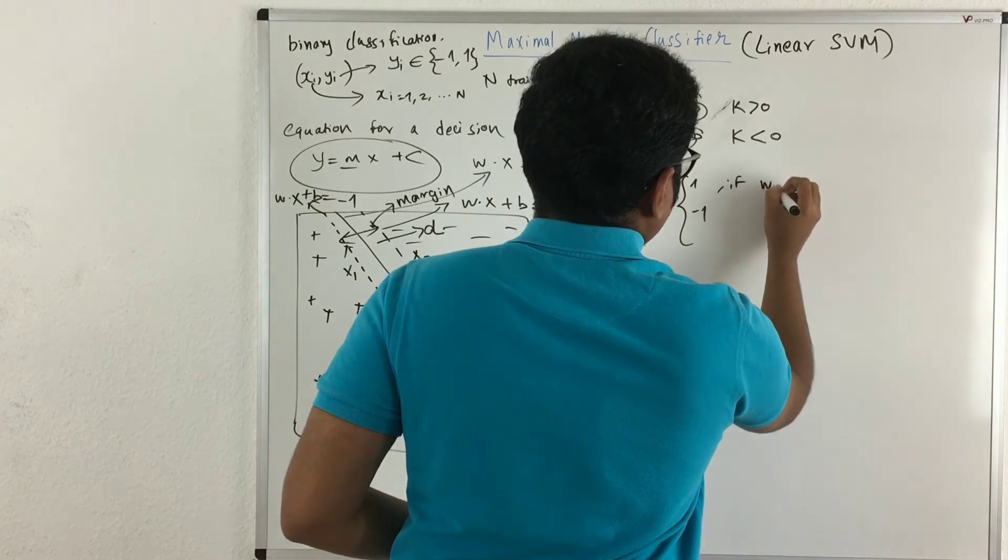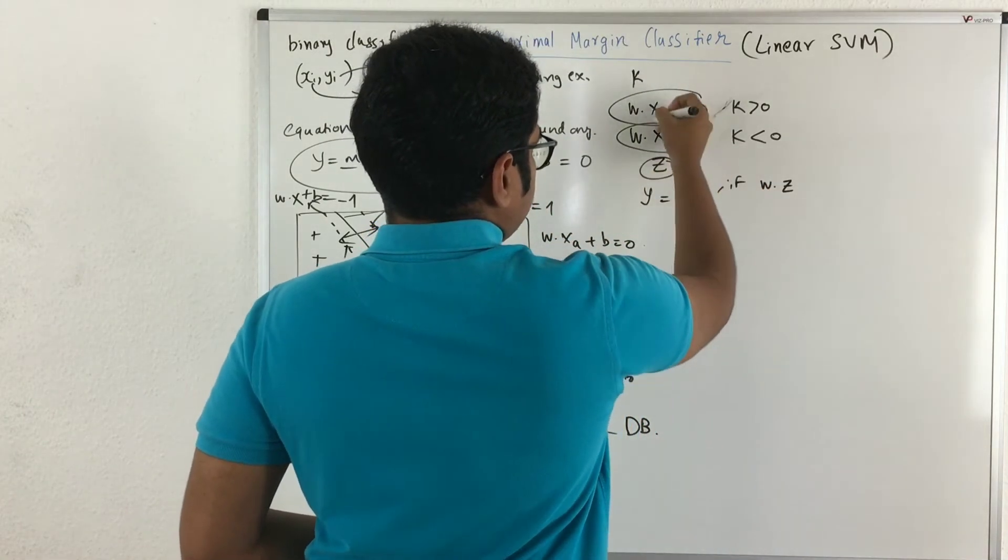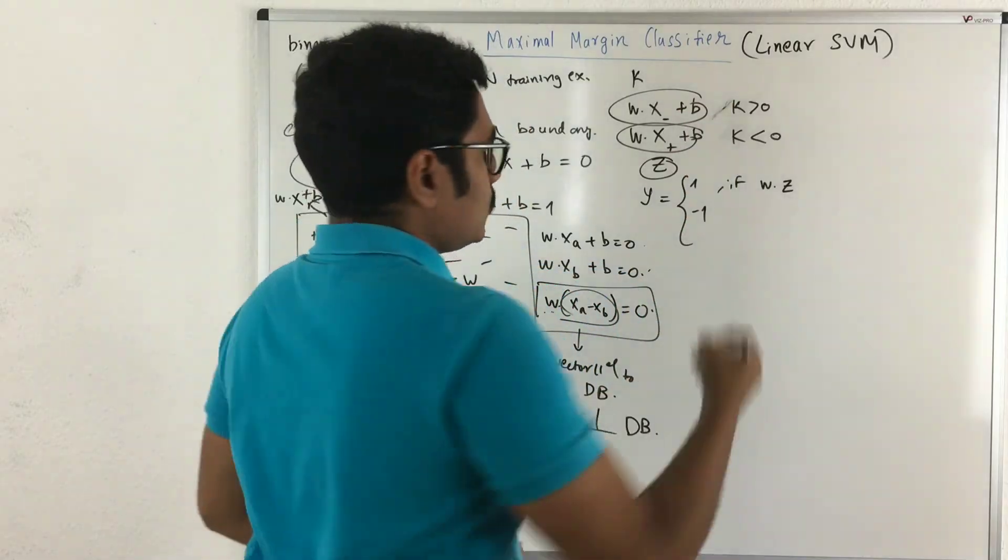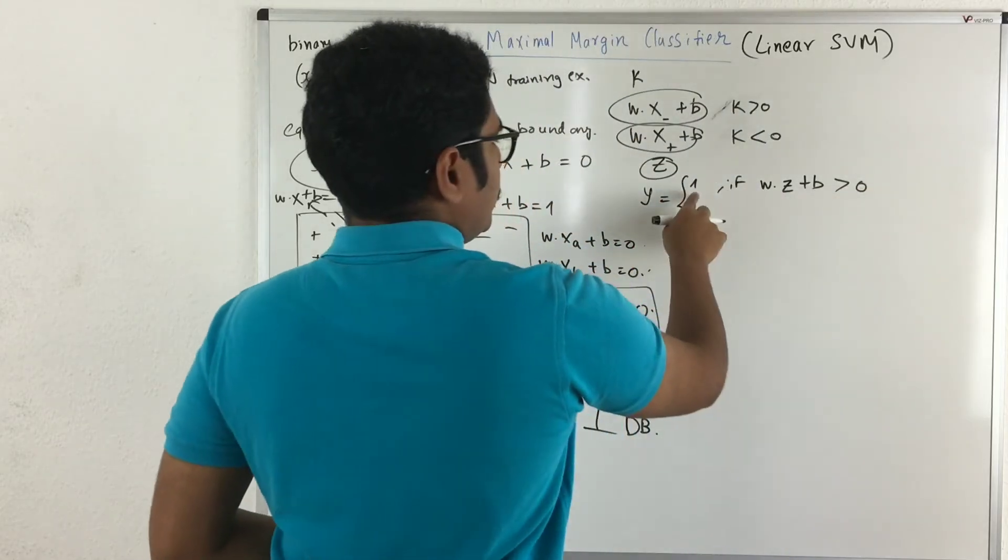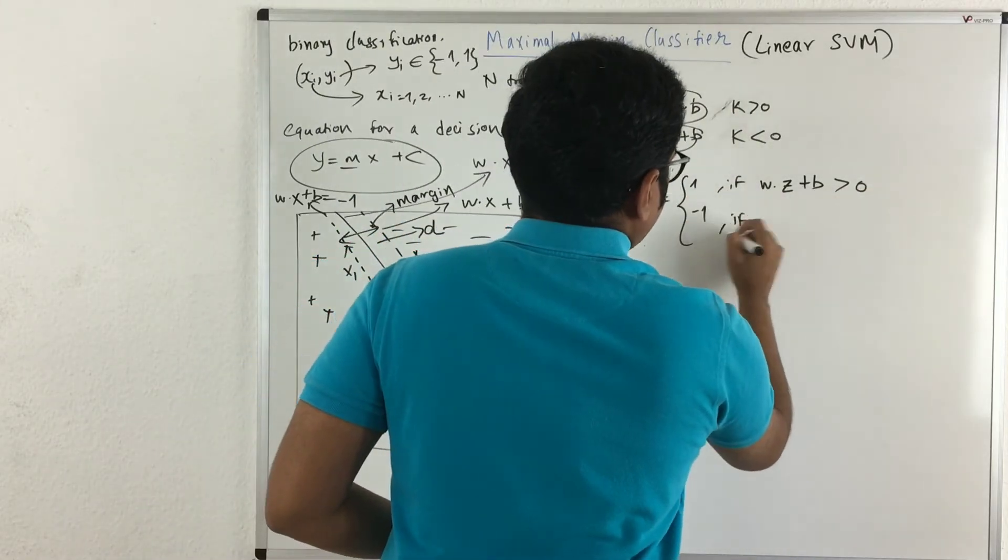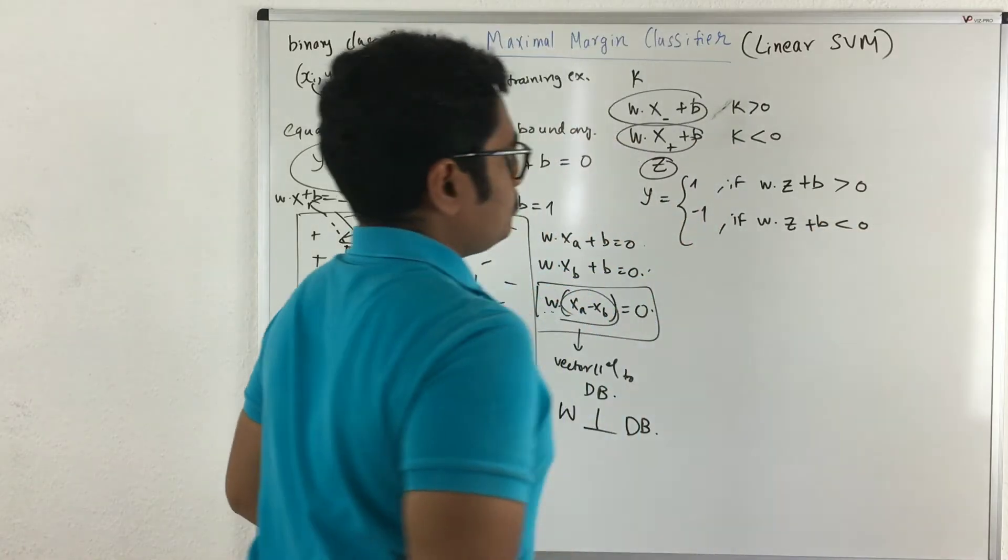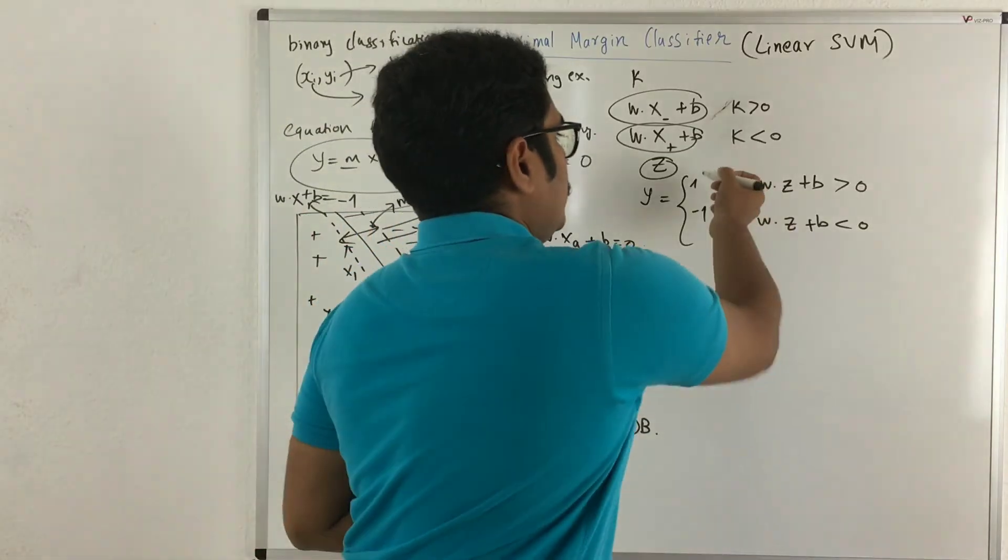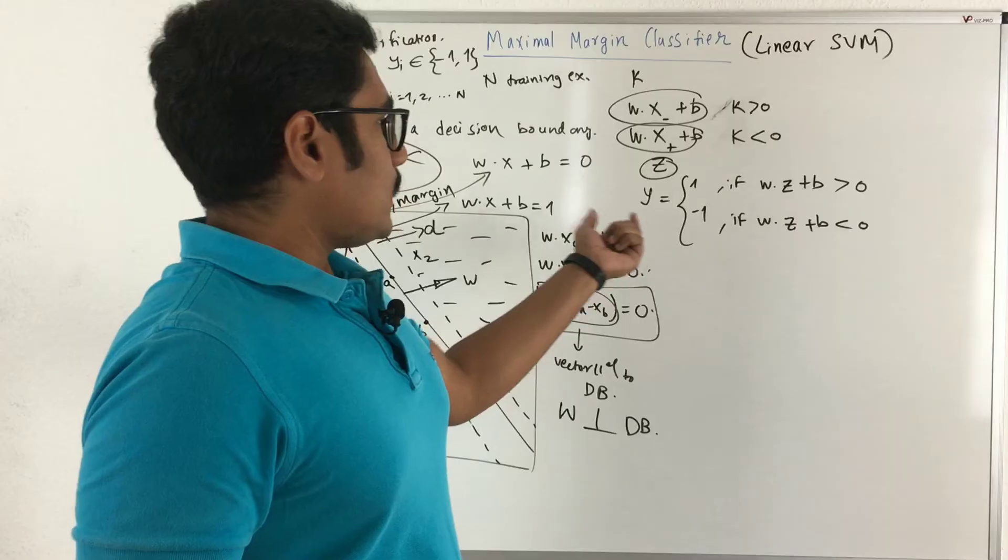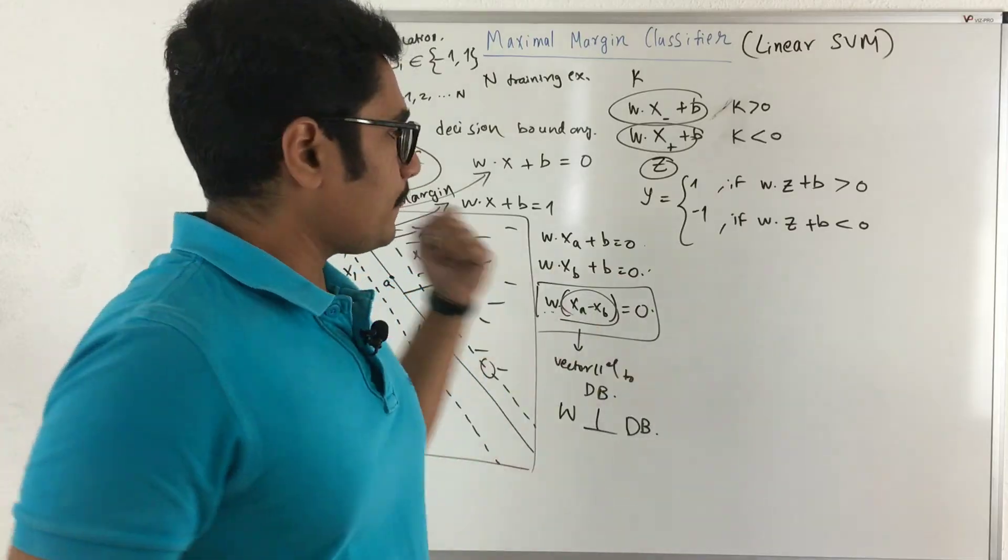If your value of W·Z, so Z is a training instance, so I have just replaced X with Z, plus B, and if it is greater than 0, it means it is 1, and this is true if it's less than 0. So with this, what you can do is for any training example, you can try to predict the class label whether it belongs to positive class or negative class.